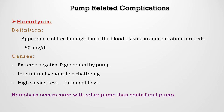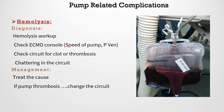The first pump-related complication is hemolysis, defined as the appearance of free hemoglobin in blood plasma at a concentration greater than 50 mg. Hemolysis occurs when there is extreme negative pressure generated by the pump, such as in inadequate venous drainage, intermittent venous line chattering due to hypovolemia, or high shear stress with turbulent flow. Hemolysis can also occur more commonly with roller pumps than centrifuge pumps. A cardiac surgery patient on bypass for 12 hours may develop hemolysis, whereas an ECMO patient can remain on support for weeks without hemolysis with proper management.